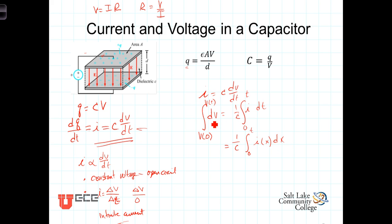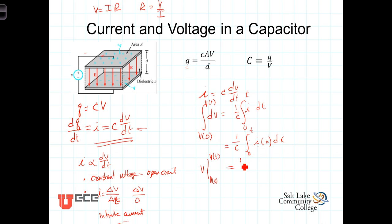On the left-hand side we can integrate and we get V evaluated at the initial voltage and the voltage at some time t. On the right-hand side we're not able to integrate until we know what i of t is. So we have 1 over C times the integral from 0 to t of i(x) dx.